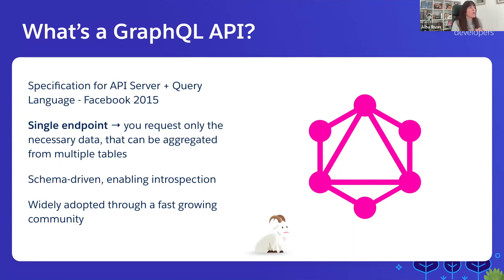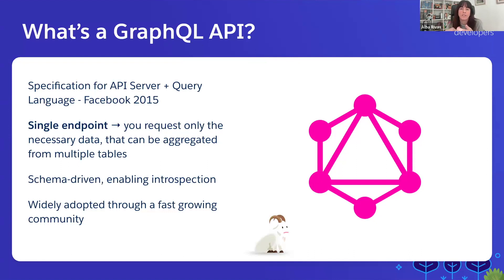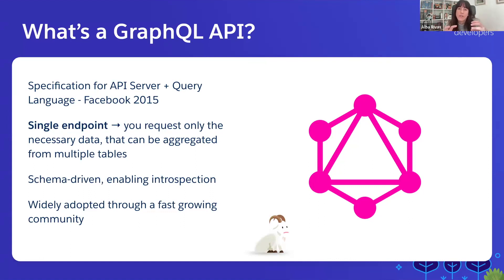Why did Facebook create the GraphQL API specification? Because of how the Facebook mobile app works — you open it, start looking at your feed, and the app needs to retrieve information from your friends and what they're posting. As you scroll, you retrieve more and more data. So they wanted to create a new, very performant way of retrieving data from the backend for that specific use case.